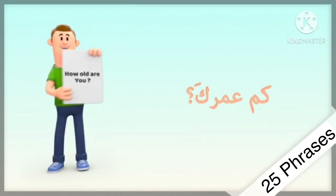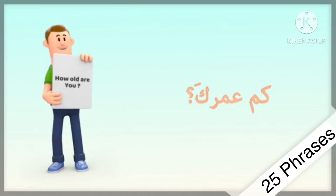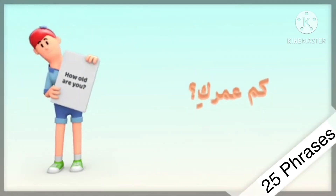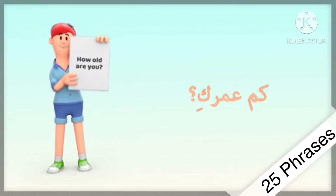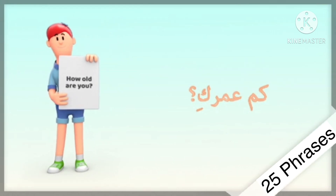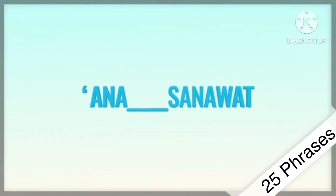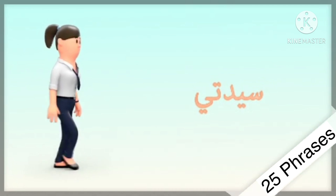'Kam umruka' means 'how old are you' in male form, and in female form it is 'kam umruki.' When replying, you have to say 'ana — sanawat' filling in your age.